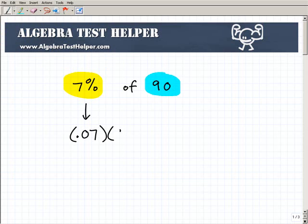So 0.07 times 90. Get your trusty calculator out. 0.07 times 90 is equal to 6.3. So 6.3 is 7% of 90.